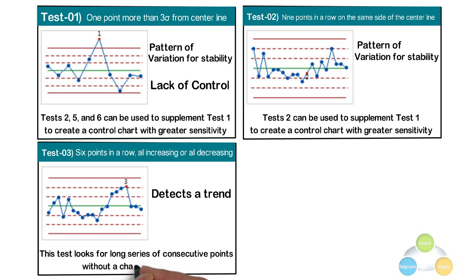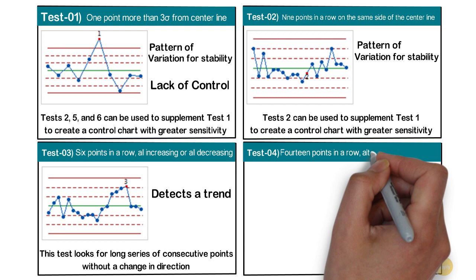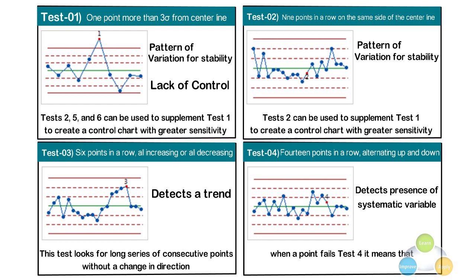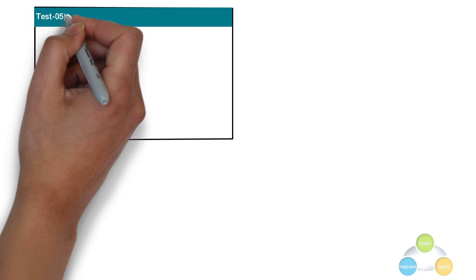Test 4: 14 points in a row alternating up and down. Test 4 detects the presence of a systematic variable. The pattern of variation should be random. But when a point fails test 4, it means that the pattern of variation is predictable.